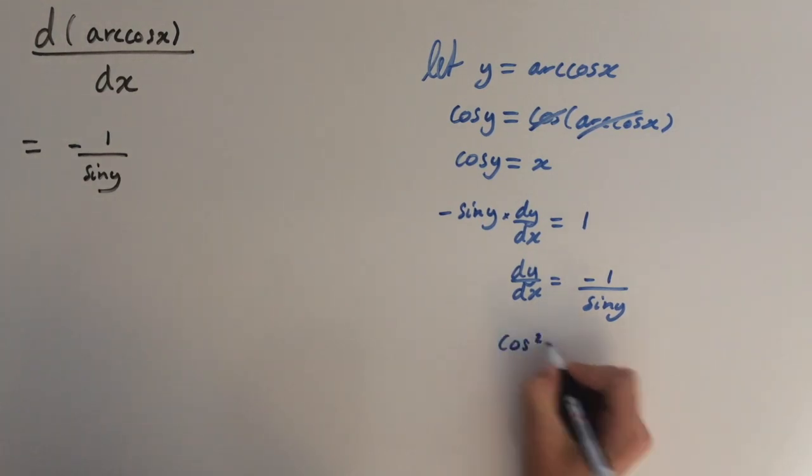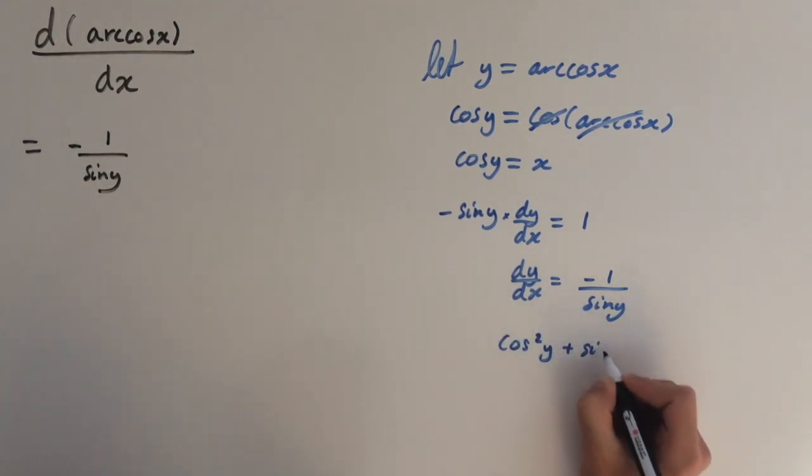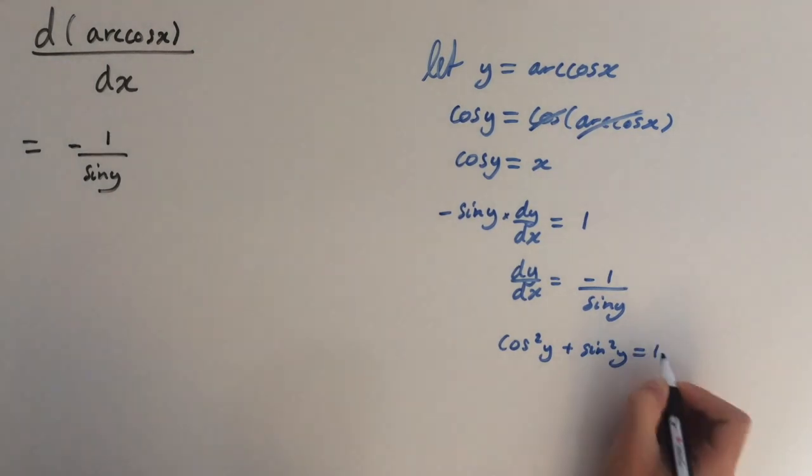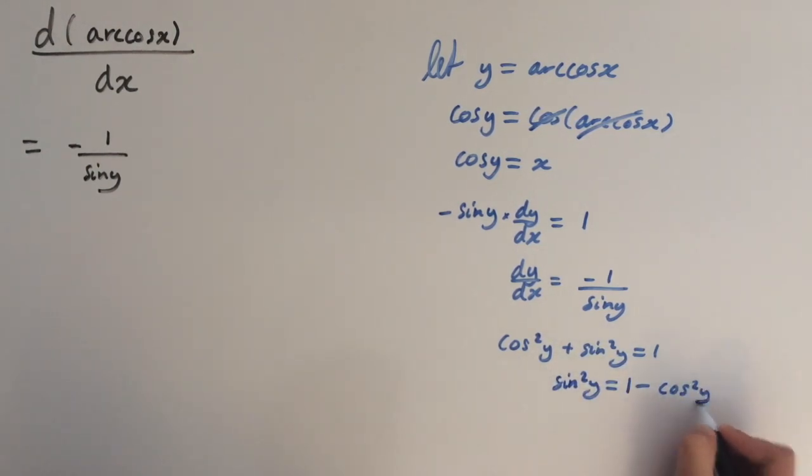But we know that cos squared of y plus sine squared of y equals 1. So let's get it in terms of sine of y. So sine squared of y equals 1 minus cosine squared of y. Which means that sine of y equals square root of 1 minus cosine squared of y.